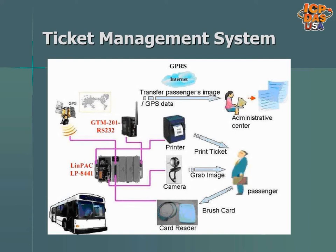Ticket management systems with cellular modems are being used in transportation systems like metro railways and buses. LP8441 Linux-based programmable automation controllers are being used in buses. A card reader, IP camera, and printer is connected to the controller. A passenger boards the bus and brushes their card against the card reader. Their image is taken and stored in the controller for security. If they have a valid passport, the ticket is printed for the passenger to give to the bus driver. GT201 RS-232 cellular modems allow for information from all the buses in the system to get sent back wirelessly through the cellular network back to an administrative center.